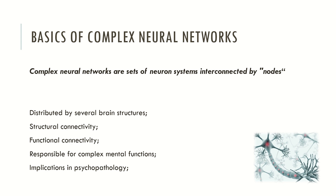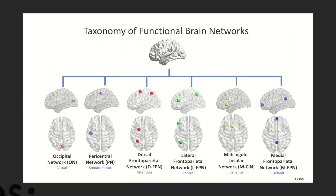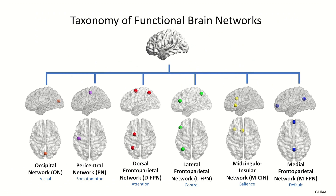Here we can see a taxonomy of functional brain networks. These are not all the functional networks described in neuroscience, but here we can see some of them. The first is the occipital network, which is mainly responsible for vision. Then we have the pericentral network, which is typically associated with somatosensory functions and somatosensory perception. Another one is the dorsal frontoparietal network, which is mainly attributed to the functions of attention.